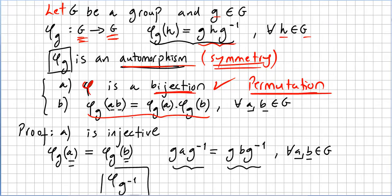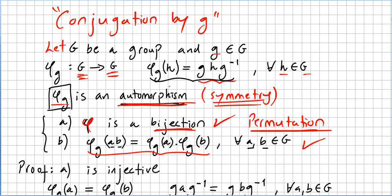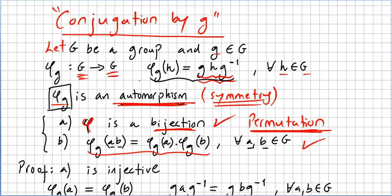We have shown φ is a bijection and satisfies the homomorphism property, so φ is an automorphism. Not only is φ_g a permutation of the set G, it also preserves the group structure — and that is very important. This kind of map is called an automorphism of G. Furthermore, this specific mapping is called conjugation by g.